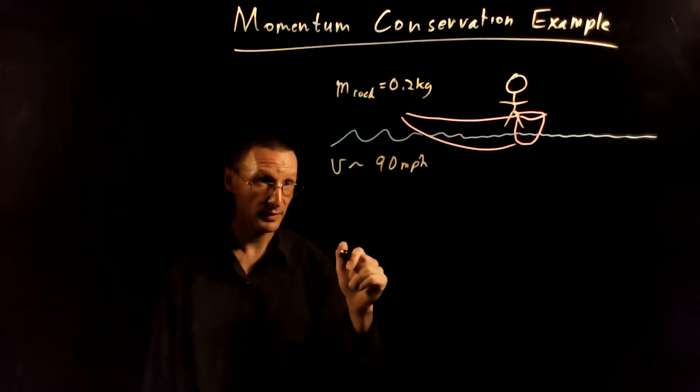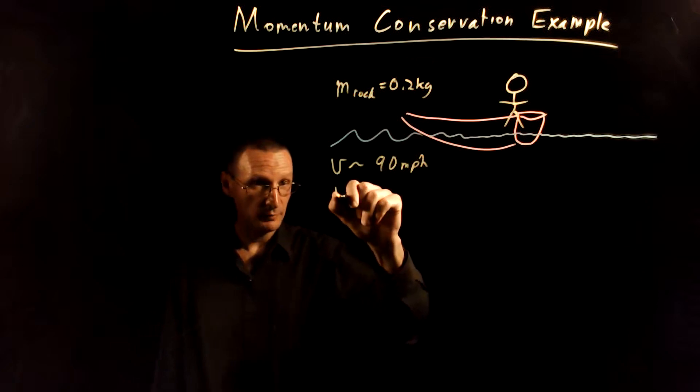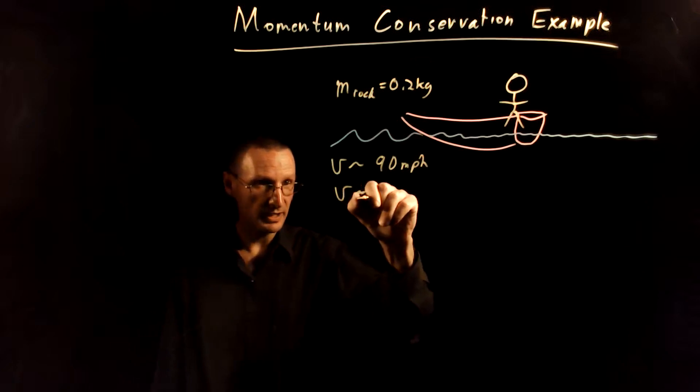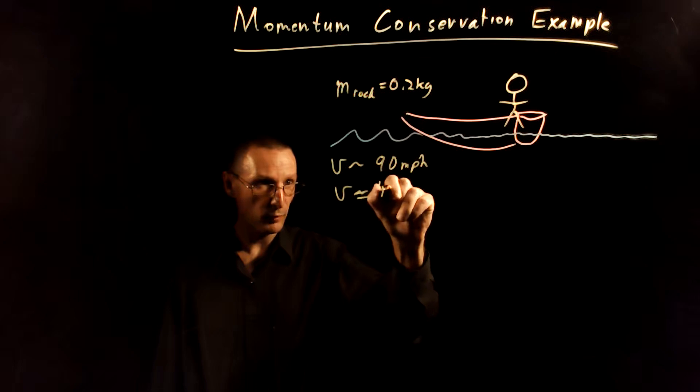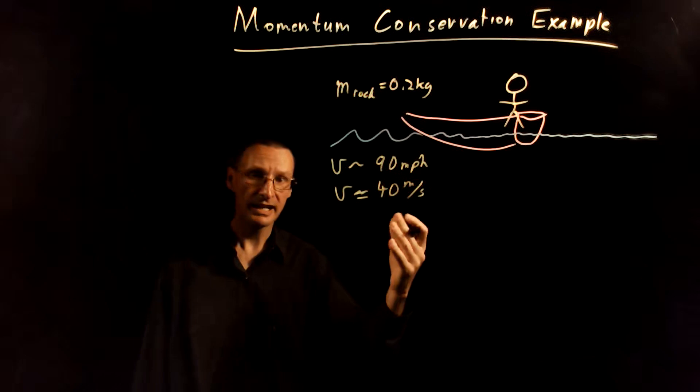That's pretty fast for a baseball pitcher, and this is going to translate into a speed of about 40 meters per second.